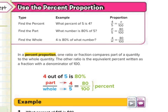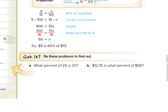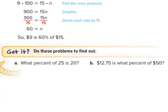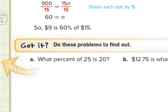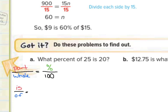So let's go right to our got-it questions. What percent of 25 is 20? We're going to set this up one of two ways. We could set this up as part over whole equals the percent over 100. Another way of looking at this, instead of part over whole, is 'is over of' equals the percent over 100.